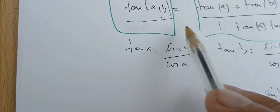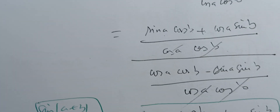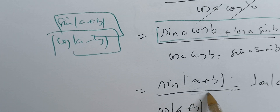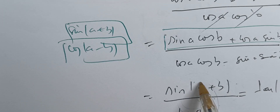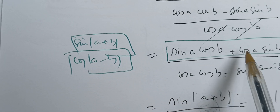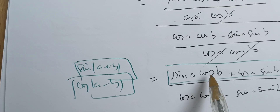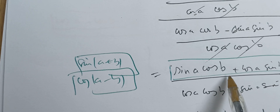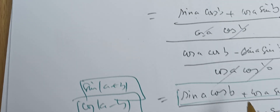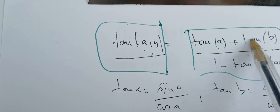We can also start from the other direction. Starting from the tangent addition definition, we apply the expansion using the sine and cosine addition formulas, then divide both sides by cosine a cosine b, and in this case we arrive at our result.